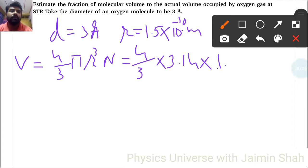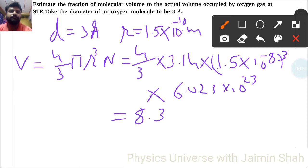it becomes 1.5 × 10^-8 centimeters, raised to the third power, times N = 6.023 × 10^23. By calculating all these terms, we get approximately 8.3. Now for the fraction of molecular volume